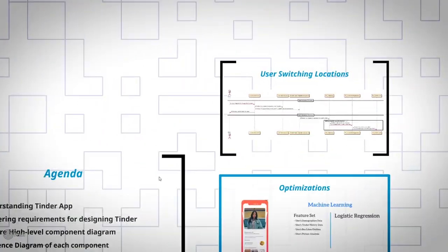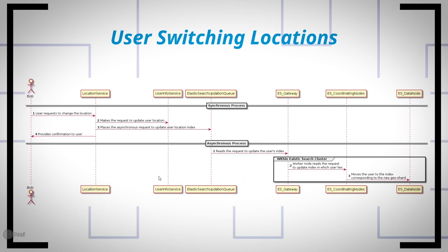Now let's look at the use case where a user changes their location. Users don't always stay at the location where they first signed up — as humans we like to travel and socialize with locals to learn about culture and the best places to eat. As explained in the fetch user recommendation section, a user is placed in a geo-sharded index when they first sign up. A similar process takes place here: we update the user's location in the correct geo-sharded index based on their new location. For performance reasons, this is again split into synchronous and asynchronous parts.